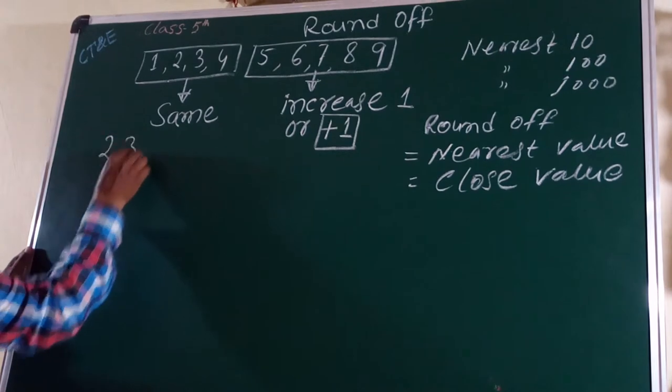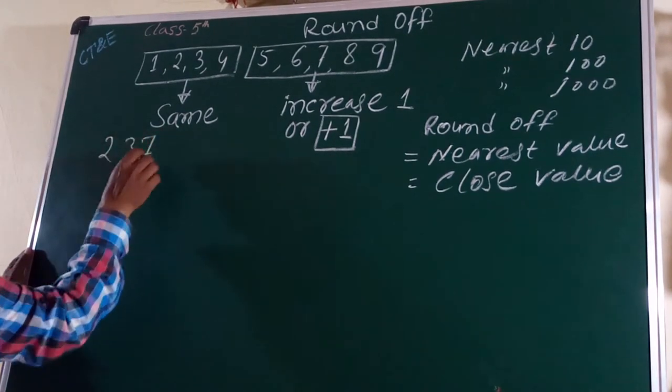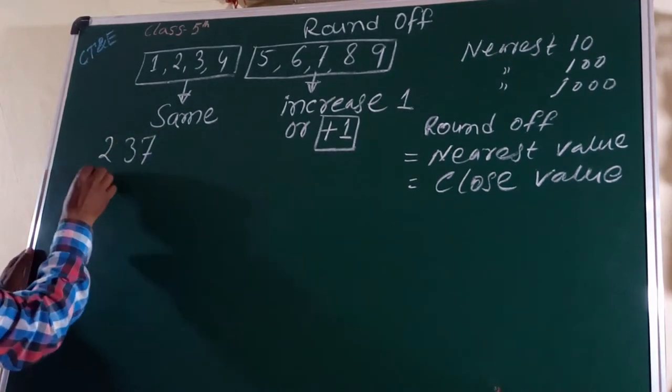Value 237 is rounded to ten place, round up.